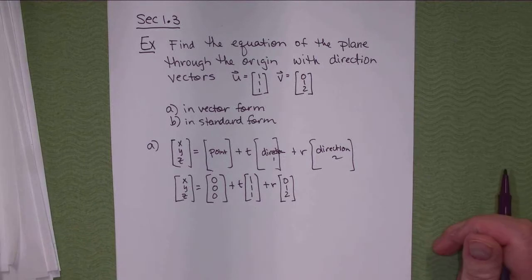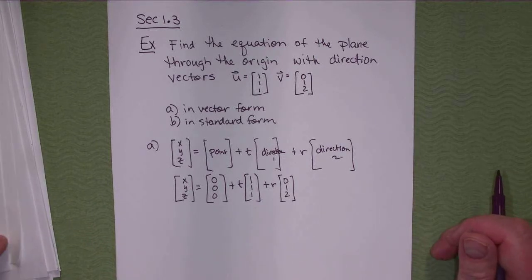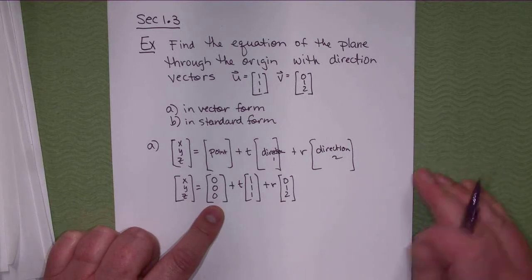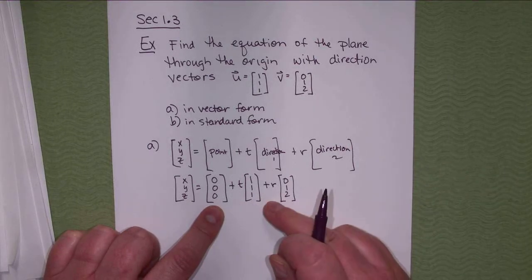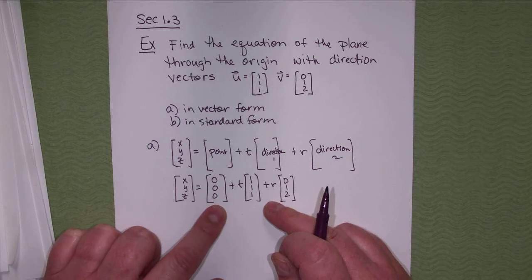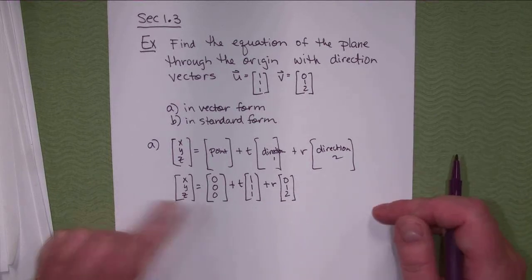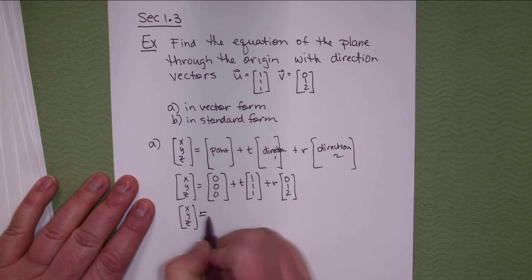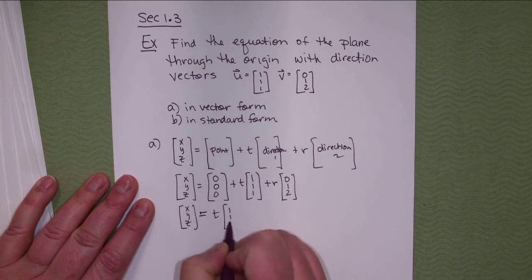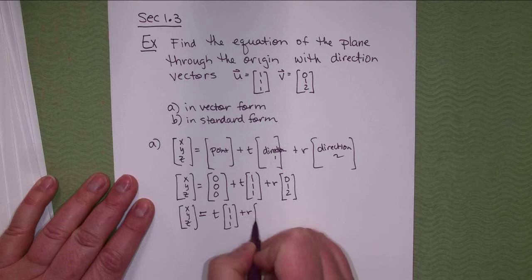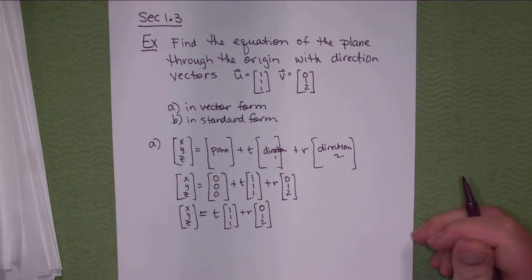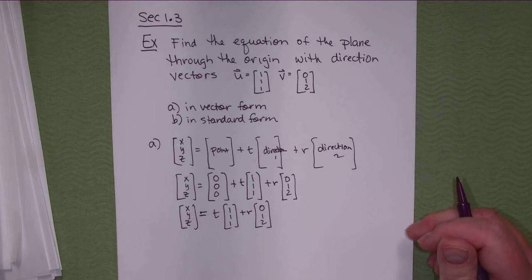If they wanted parametric form we would take out all the brackets and write each equation separately. Also, if you didn't include the zero, zero, zero point it would still be considered a plane, because with two direction vectors it's understood to go through the origin. So you could also have written it without that point, since whenever a point is missing it's understood to be through the origin.